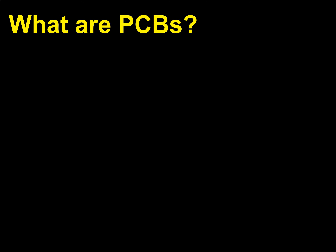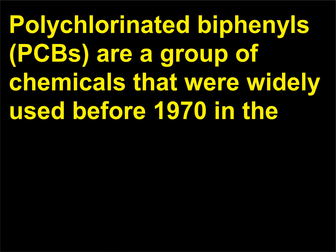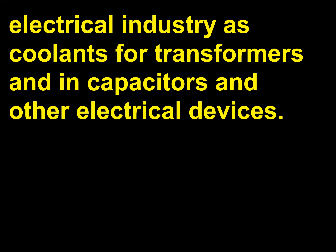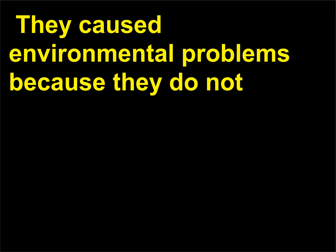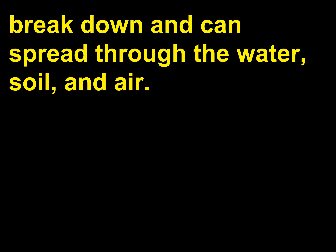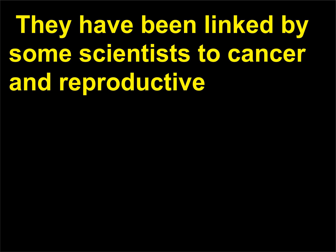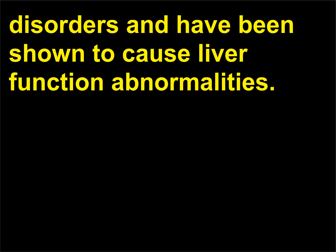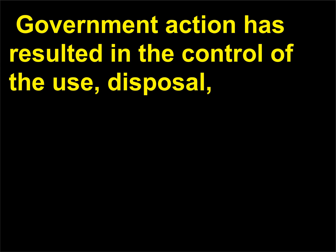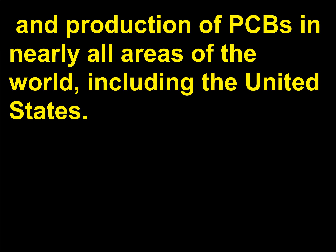What are PCBs? Polychlorinated biphenyls, PCBs, are a group of chemicals that were widely used before 1970 in the electrical industry as coolants for transformers and capacitors and other electrical devices. They caused environmental problems because they do not break down and can spread through the water, soil, and air. They have been linked by some scientists to cancer and reproductive disorders and have been shown to cause liver function abnormalities. Government action has resulted in the control of the use, disposal, and production of PCBs in nearly all areas of the world, including the United States.